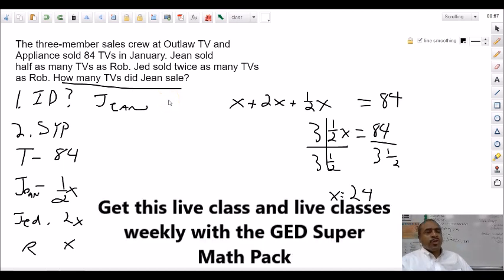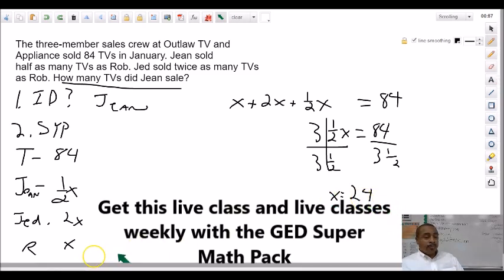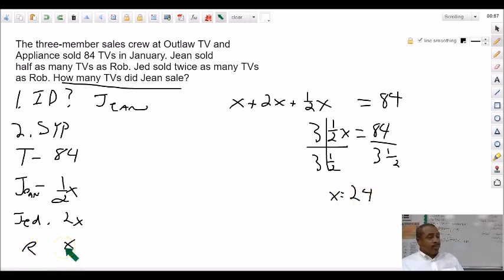You see how that works? So, on the GED test, this is one of the things we have to be aware of. So, after we've done all of this work, set up this equation, solve the equation, we still have to make sure that we're answering the question. So, the answer that we get is correct, but it doesn't answer their exact question. This X equals 24, that just tells us how many Rob sold. But the question is not how many Rob sold. The question is how many did Gene sell? And so, we know from here, Gene is half of Rob, right? And so, half of 24 is 12. And so, that's why the answer is Gene sold 12 TVs.